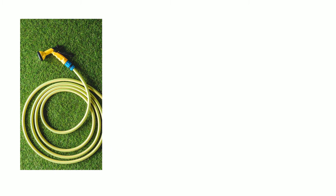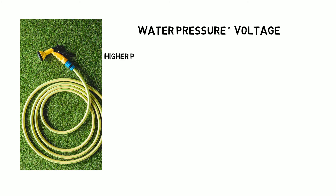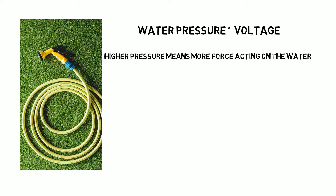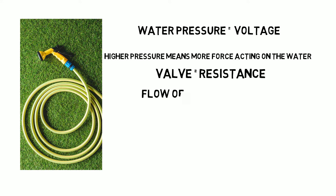The analogy that can help us understand this is your garden water hose. Think of a battery or voltage as the pressure of your water supply. The higher the pressure the more force is trying to push the water out of your outlet. The outlet valve is acting as a resistor by reducing the amount of water that can leave the outlet. The flow of water that does leave the outlet and through the hose can be thought of as the current.